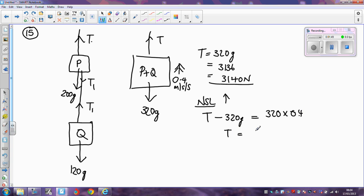So T just becomes 320g, which we already know, plus 320 times 0.4. If we work that out, it comes out as 3264, or 3260 Newtons.